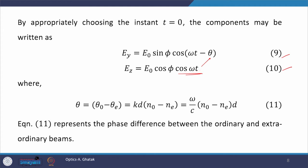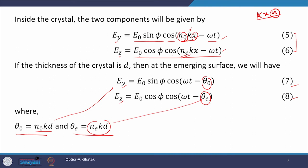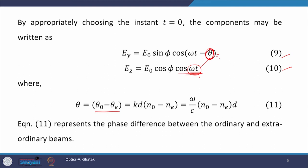Phase is not an absolute quantity; it is always measured with respect to a reference. We made E_z our reference, so the relative phase appears only in equation 9, where θ = θ_O − θ_E. Equation 11 gives the phase difference between the ordinary and extraordinary beams. If the crystal thickness is such that θ = 2π, 4π, ..., the emergent beam has the same polarization state as the incident beam.